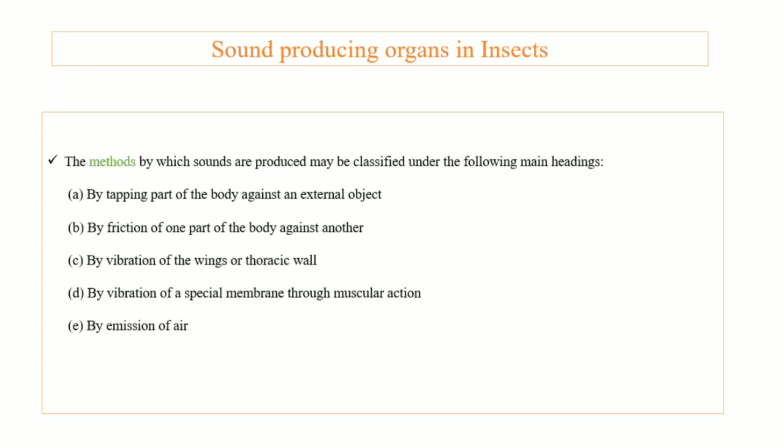Next is methods of sound production — in which ways can sounds be produced? There are five different methods used for sound production. The first method is tapping a body part against an external object; they tap with an external object, which produces sound. The second method is friction of one body part with another body part.